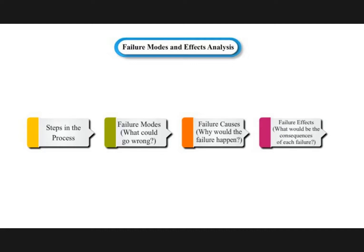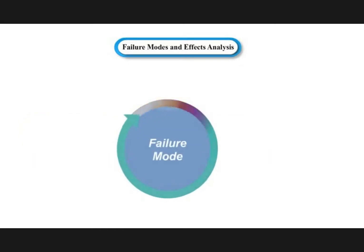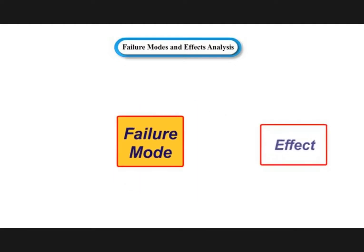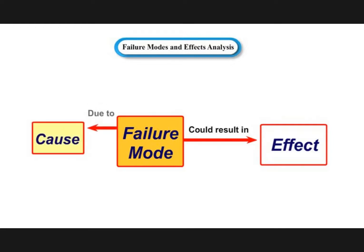Common terminologies used in FMEA are: Failure Mode – the manner in which a product or part can fail to meet specification, usually associated with a defect or non-conformance. Effect – the impact on a customer if a failure mode is not prevented or corrected. Cause – the deficiency that results in a failure mode.